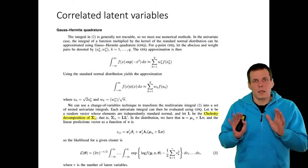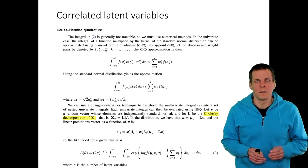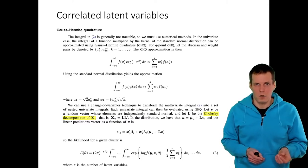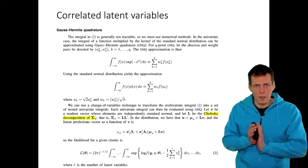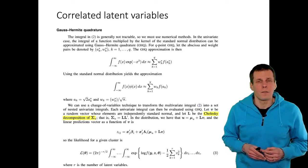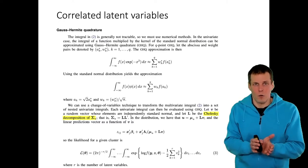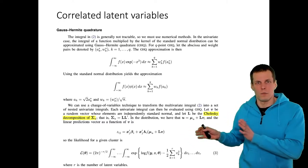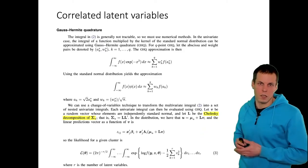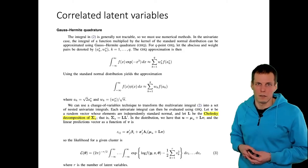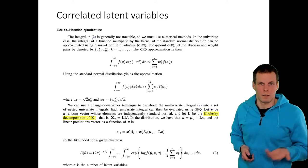To summarize the adaptive quadrature approach: choose a few integration points strategically, calculate function values at those points, compute the weighted sum, and if you have multiple latent variables, integrate over uncorrelated latent variables and recast them into correlated ones using Cholesky decomposition to get the value of the likelihood.